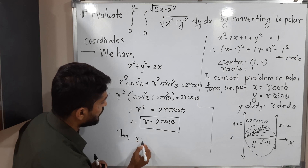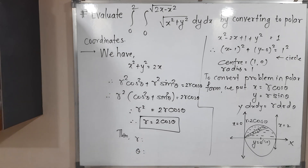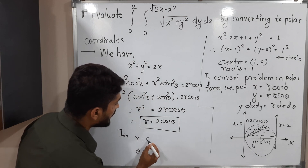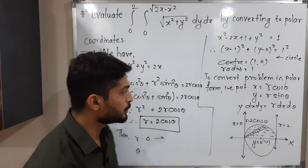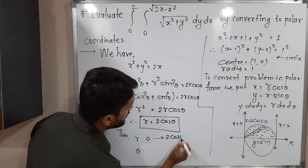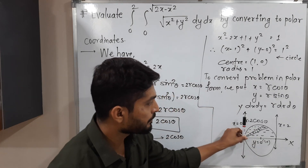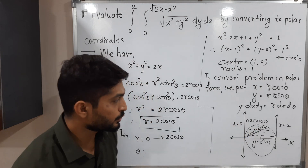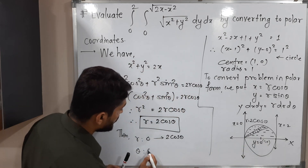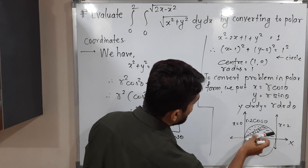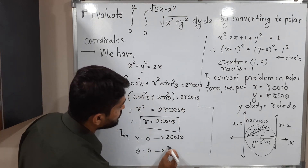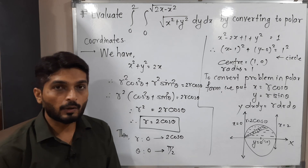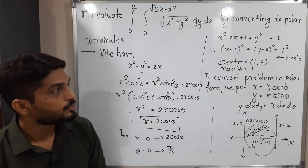For the limits: since the strip starts at the origin, the lower limit of r is 0, and the strip is bounded above by the circle r = 2cosθ, so the upper limit of r is 2cosθ. The strip starts at angle θ = 0 and rotates through 90° to cover the entire region, so θ varies from 0 to π/2.